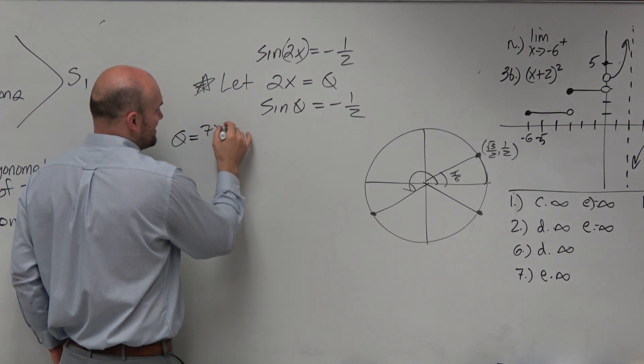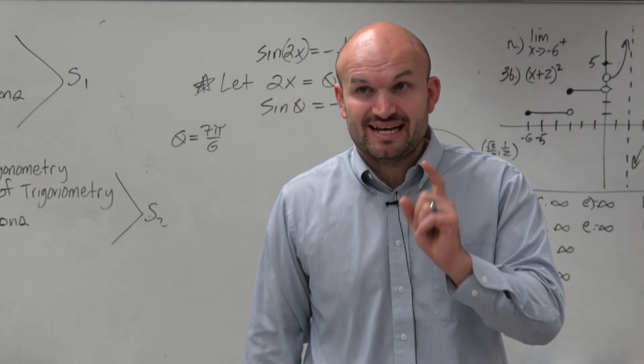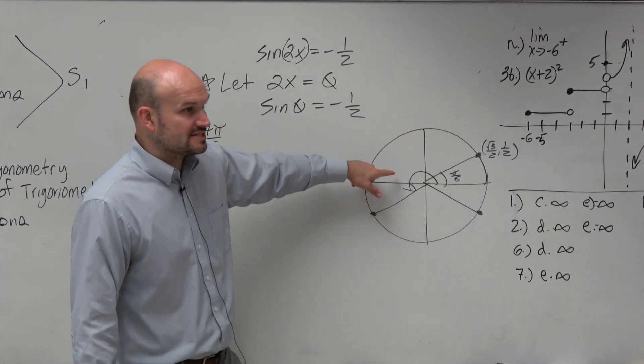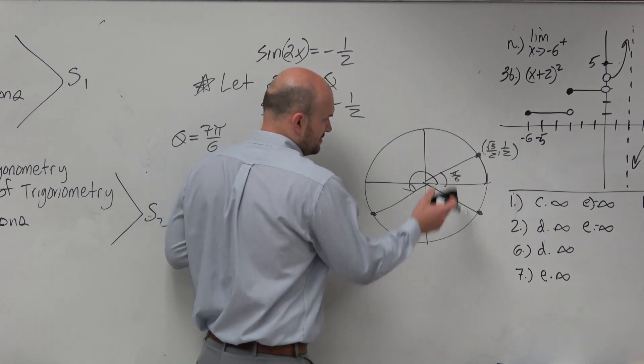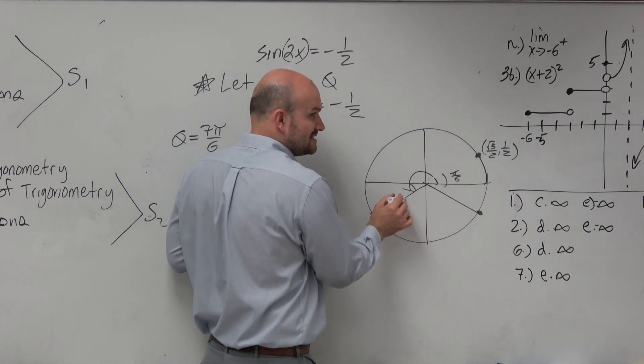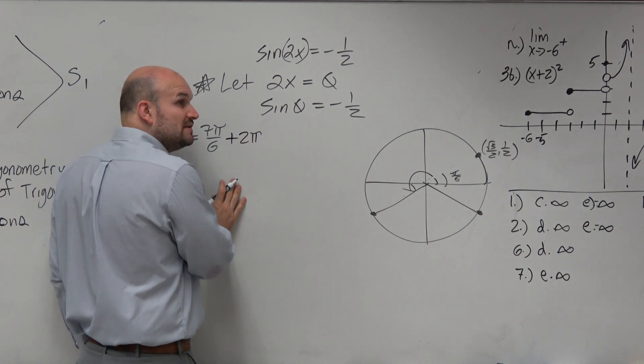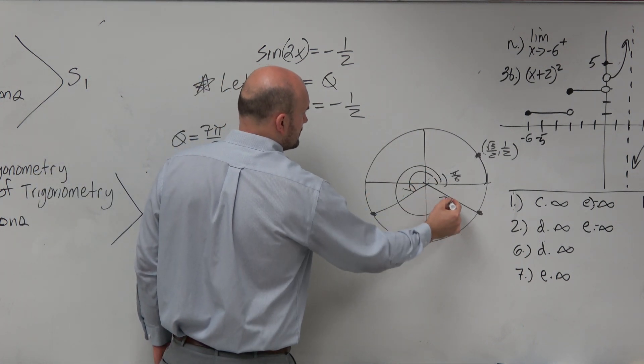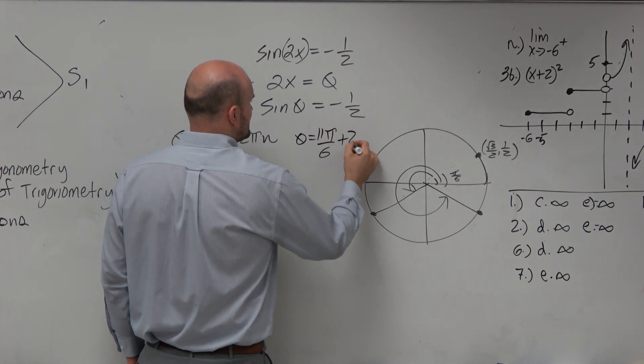So theta equals 7 pi over 6. However, there is an important thing there. There is no restrictions on the domain. It says the general solution. That means all the remaining solutions. So if I have 7 pi over 6, how many times can I keep on getting this as a solution? Infinitely many times. Now, I don't want you to confuse this angle right there because this is your solution. And to get back to the solution, I have to add 2 pi. And how many times can I add or subtract 2 pi? Infinitely many times. So we use a variable n to represent that. Then we have our other angle here, which would be 11 pi over 6. So theta equals 11 pi over 6 plus 2 pi n.